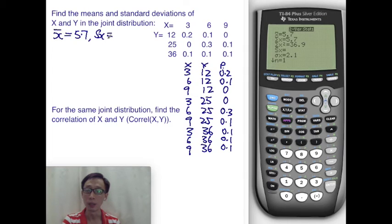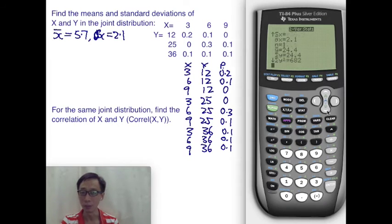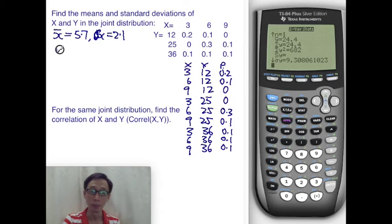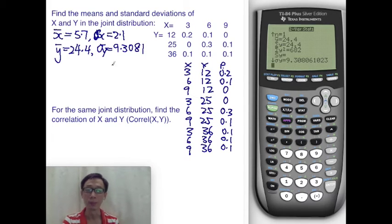Sigma X, because we are analyzing population. And you can see why I can't get the value of sample in this output here. And for Y, the Y bar is going to be 24.4, and sigma Y is going to be 9.3081. Okay, that's great. We got the answers very quickly, having spent good effort here.